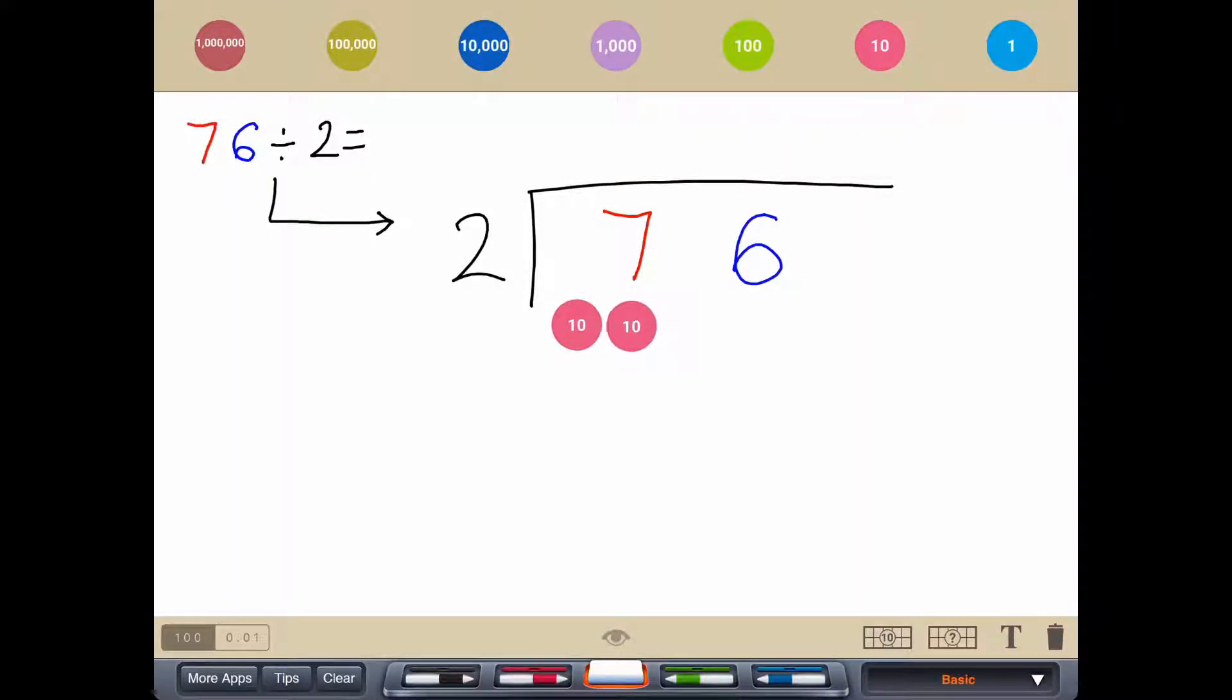76 divided by 2. We've got 10, 20, 30, 40, 50, 60, and 70 in the tens column, and then we've got 1, 2, 3, 4, 5, and 6.